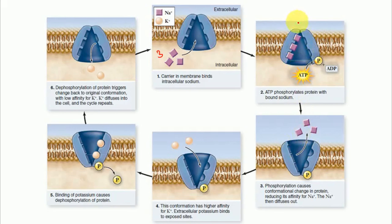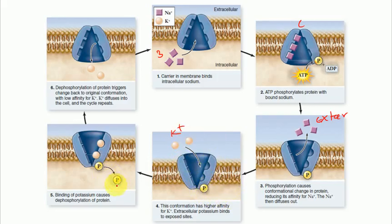The carrier protein opens to the extracellular medium; the Na+ has low affinity for the carrier protein so it moves outside. This conformation has high affinity for K+, so K+ binds to the protein carrier. At that point, the phosphate is hydrolyzed, causing another conformational change so the protein faces the cytoplasm. In this stage it has low affinity for K+ so K+ is released, but it has high affinity for Na+, so this cycle continues.